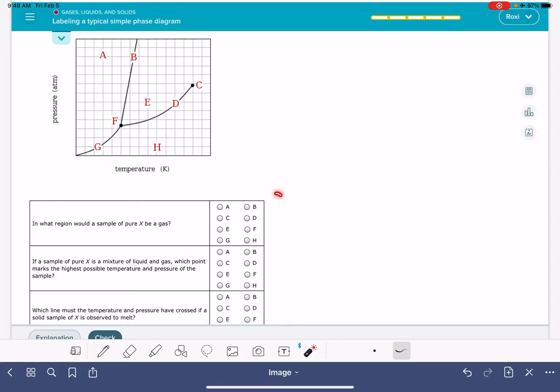Before we look at these different questions let's just begin by identifying the different parts of the phase diagram, like labeling it in terms of what state of matter is actually at each one of these areas. Area A is where our substance exists as a solid, area E is where we exist as a liquid, and area H is where the substance exists as a gas.